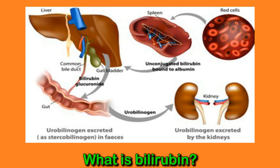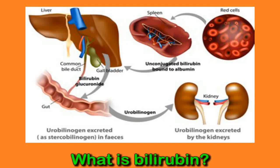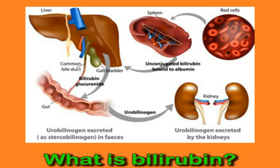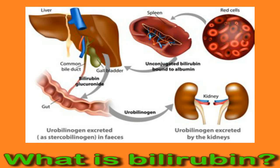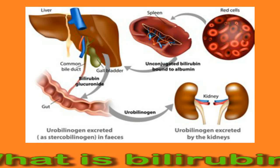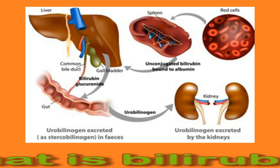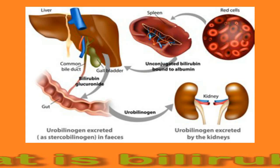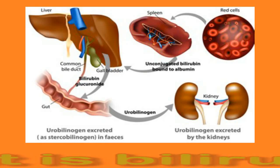Red blood cells contain hemoglobin, which helps transport oxygen around the body, and it is this that gets broken down into bilirubin and other substances. The bilirubin is carried to the liver by albumin, a simple protein. Once in the liver, bilirubin becomes conjugated, meaning it is water-soluble and can be excreted. Unconjugated bilirubin is toxic, but conjugated bilirubin is usually not, because it can be removed from the body as long as nothing is interfering with its removal.